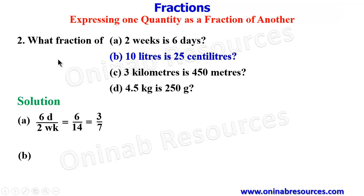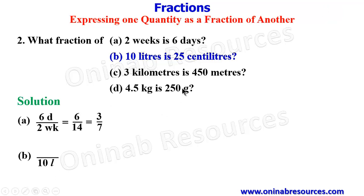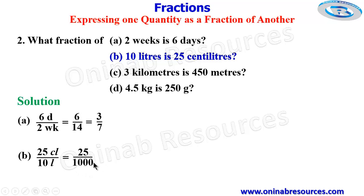We then go to B. For B, the fraction of 10 liters that is 25 centiliters. The fraction will have the denominator as 10 liters, while the 25 centiliters will form the numerator. 100 centiliters make 1 liter. Now that we have 10 liters, it's going to be 1,000 centiliters. So the fraction now becomes 25 over 1,000. In the simplest form, we divide both numerator and denominator by 25, and that gives us 1 over 40, since 25 goes into 25 gives 1, and 25 divides 1,000 to give 40.